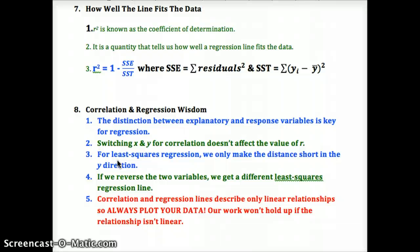Correlation and regression lines describe linear relationships. The correlation r and r-squared can help us with the direction and strength of the relationship, but for form and any potential outliers, we always have to plot our data. Every time you do this — for a quiz, a test, or in real life — always plot your data, calculate r and r-squared, look at the scatter plot, look at the regression line on top of it, and examine r and r-squared.